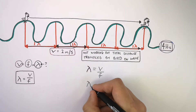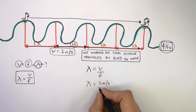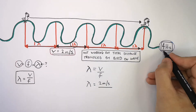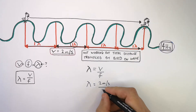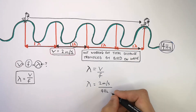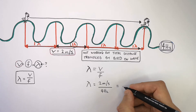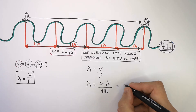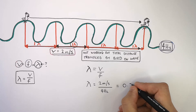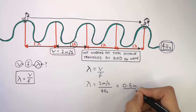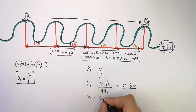So lambda equals V — which is two meters per second — divided by the frequency, which is four hertz. Wavelength equals two meters per second divided by four hertz. That gives you an answer of 0.5 meters. So the wavelength is 0.5 meters.